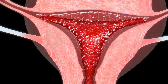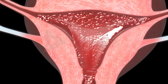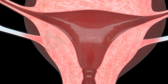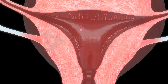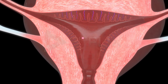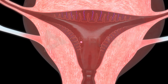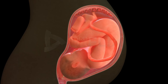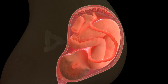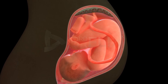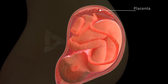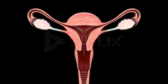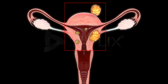The endometrium undergoes cyclic changes during the menstrual cycle. It is the site of implantation of the blastocyst. After implantation, it also contributes to the formation of the placenta.